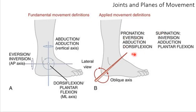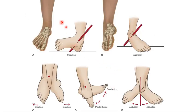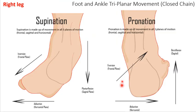Instead of trying to identify dorsiflexion, plantarflexion, and all that rigmarole, it's better to look in terms of pronation and supination. Keep in mind that your foot is either collapsing with gravity or overcoming gravity. This shows the combined motion: pronation is eversion, dorsiflexion, and abduction. If you bring your foot up and out, and if your foot is down and in, that's supination — inversion, plantarflexion, and adduction.